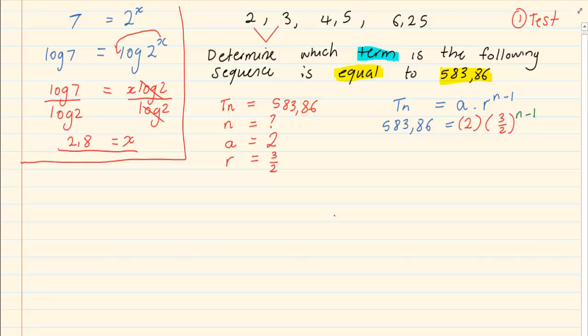Now be careful with your algebra at this stage. This is where pupils start doing silly things like they combine 2 and 3 over 2, so they end up making it 3 to the power of n minus 1. This is absolutely incorrect. What you need to do is the algebra says get the unknown alone. First we are going to divide by 2.